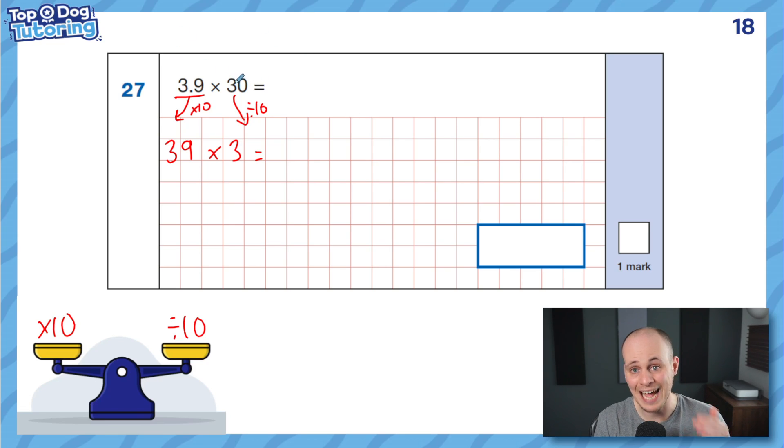So 3.9 times 30 is actually the same question as 39 times 3. And I know which one I'd want to be answering more easily. 39 times 3, you can probably do it in your head, but just write it down for the sake of being accurate. 3 times 9 is 27. 3 times 3 is 9 plus 2 is 11. It's 117. I don't have to do anything to that answer now because I already balanced it out with my other factor. Unlike before, where I didn't do that with my other factor, I had to balance it out with the answer. This time it's done. It's 117.